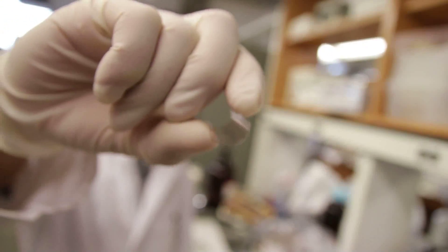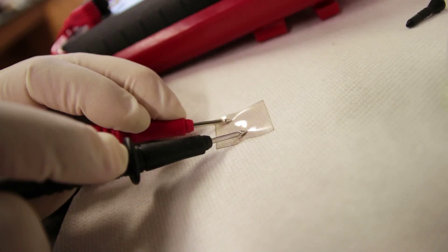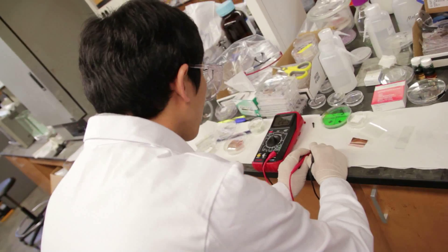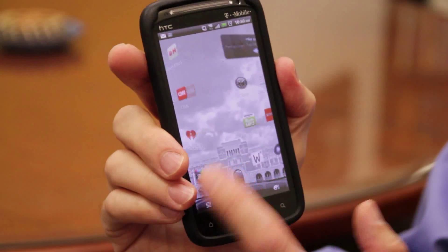There's a large demand for transparent conductors, things that look like glass but can conduct electricity. And this is needed for touchscreen displays, which are throughout smartphones, iPads, and also photovoltaics, which are solar panels.